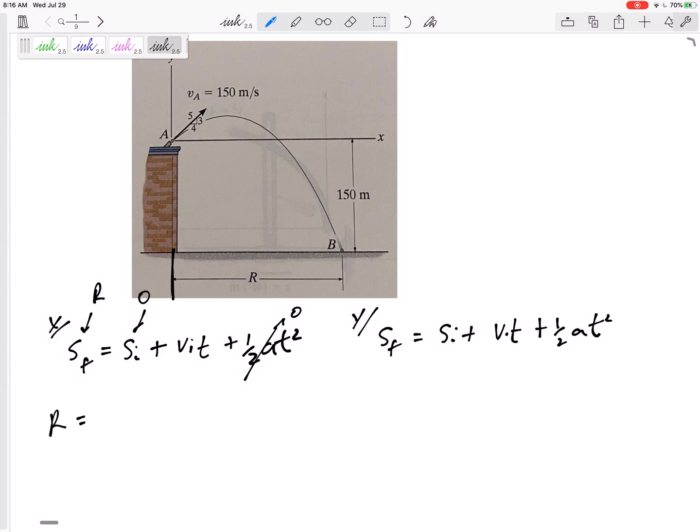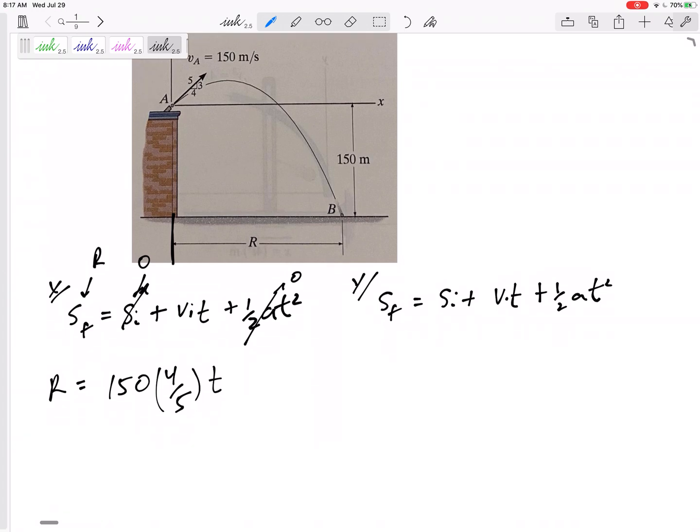We're starting at zero, ending at R. We're starting with a velocity—not 150, only the x component. Remember, only the x: 150 times... we could do sine or cosine. I'm gonna say four-fifths of 150. Some of y'all like to figure out what angle that is and then say cosine of that angle, and you end up back at four-fifths. So use those ratios if you have those dimensions. That is the x equation, and I've got two unknowns. I can't solve right away, so let me go to my y equation.